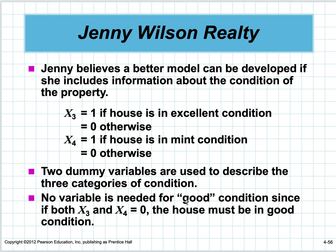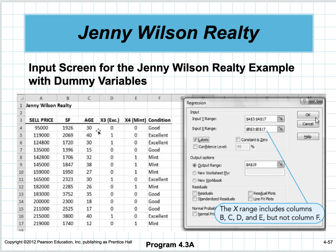What I would normally do is assign zero, one, and two or one, two, and three. But do it the way the book says—it's probably better. So zero, zero is good; one, zero is excellent; zero, one is mint. Then you run it again, extending the X range from B2 to C17 all the way to E17 to include the dummy variables.